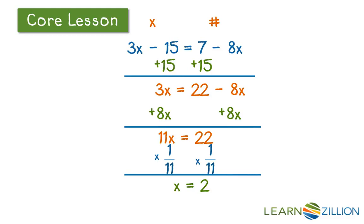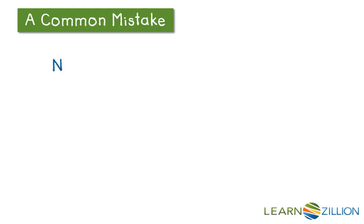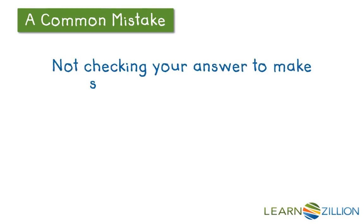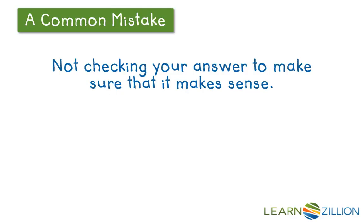Now we need to check our work to make sure we did this correctly. If we substitute 2 back into the original equation, we have 3 times 2 minus 15 is equal to 7 minus 8 times 2. This is a true statement, so we know the algebra is correct and x really is equal to 2. A common mistake for this lesson would be not checking your answer. Remember to substitute your answer back into the original equation to make sure it makes a true statement. Make sure you do that with all of your solving equations.